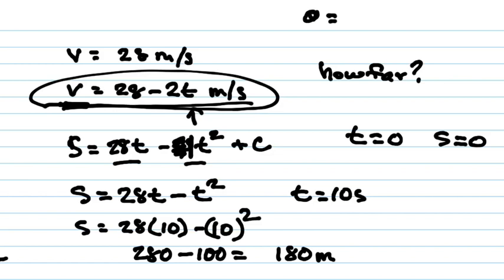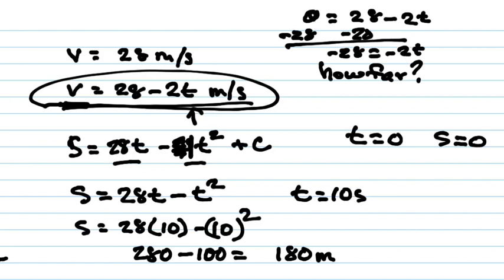So velocity is zero, which gives us 28 minus 2t equals zero. Subtract 28 from both sides, which gives us negative 28 equals negative 2t. Divide both sides by negative 2, which gives us 14 equals t. 14 what? Seconds.